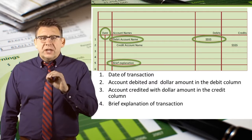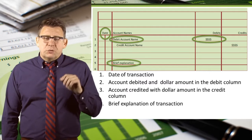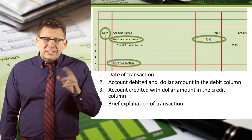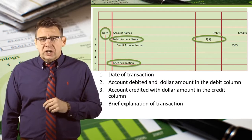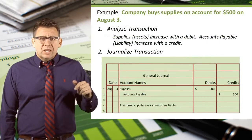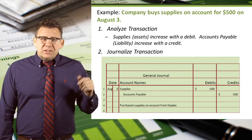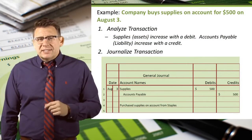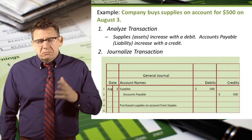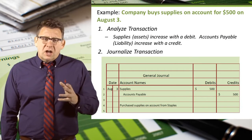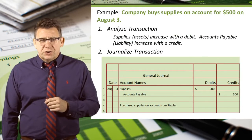So let's look at the three transactions we previously analyzed and see if we can journalize them. In this example, a company buys supplies on account for $500 on August 3rd.